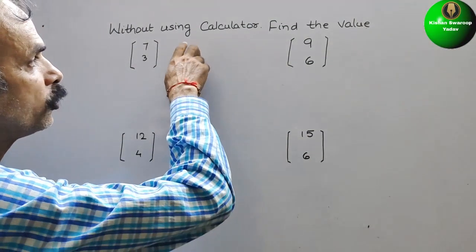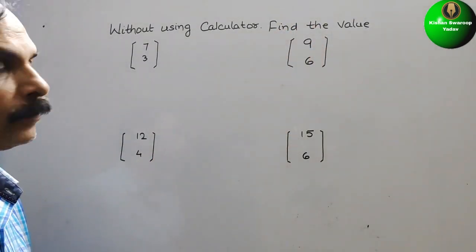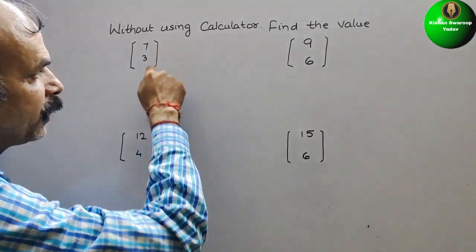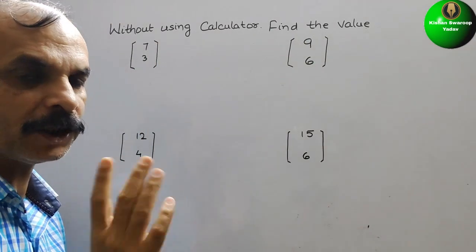Your question is, without using calculator, find the value. So see that, they have written in the vector form, so here they have given 7 and down they have given 3.